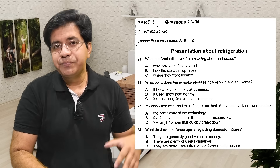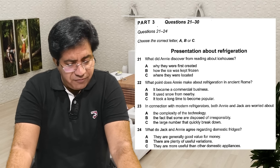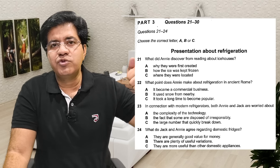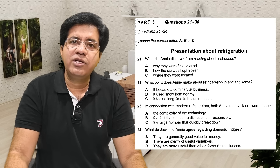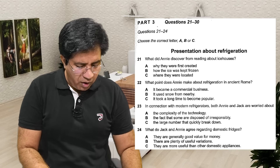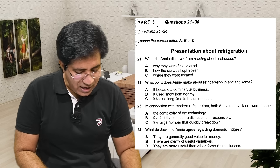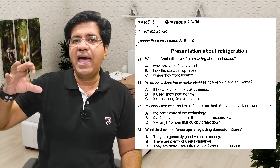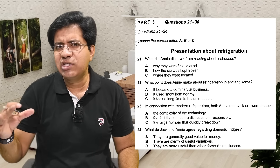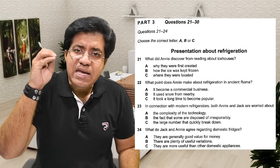You must try to eliminate at minimum one wrong choice from three — even then your success rate goes to 50/50. Question 23: 'In connection with modern refrigerators, both Annie and Jack are worried about what?' Annie and Jack — Jack is another character. In multiple choice questions, never read the articles — they've written 'the complexity of the technology' but just note 'complexity of technology.'